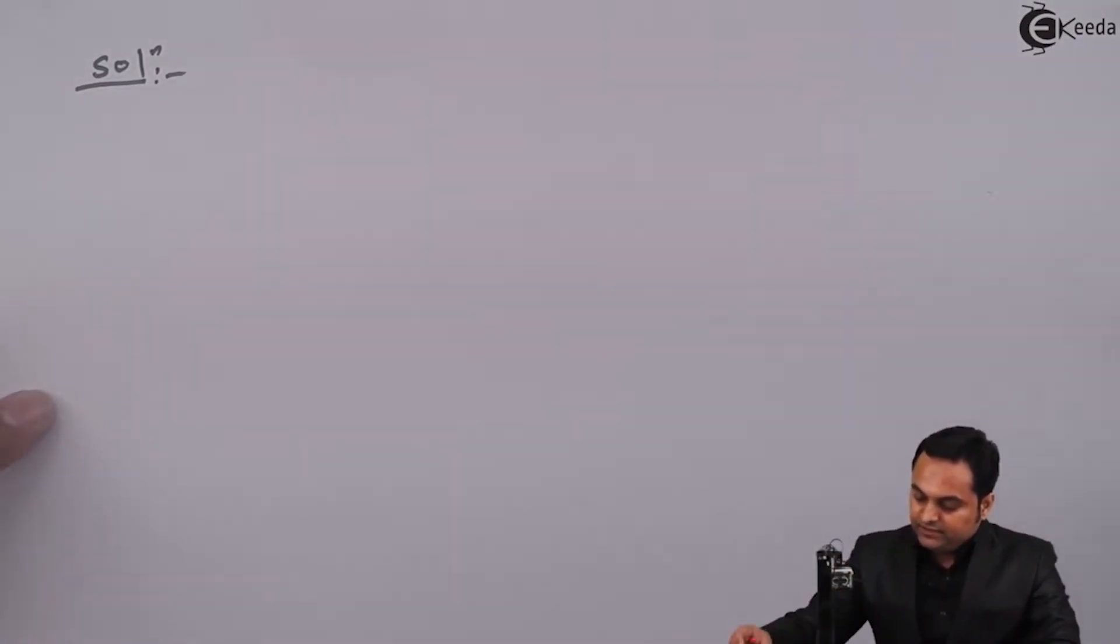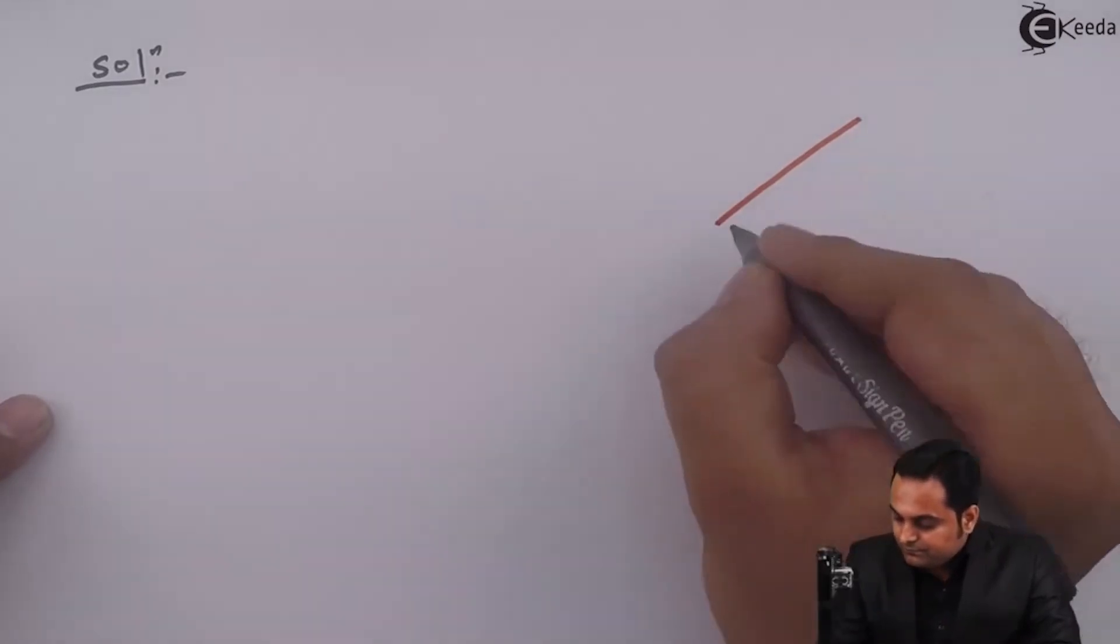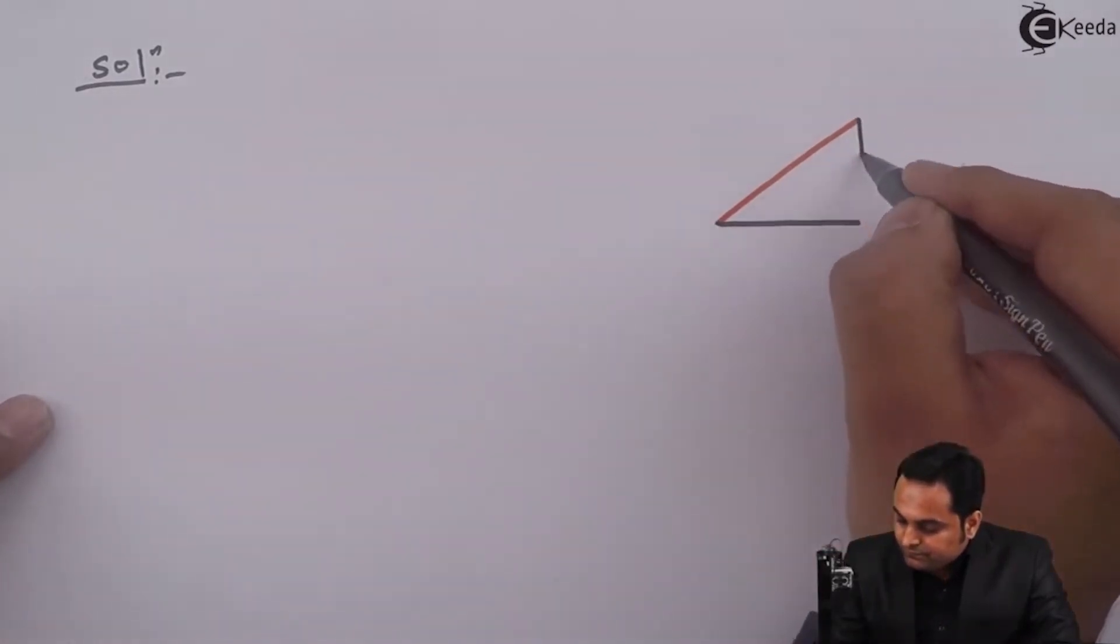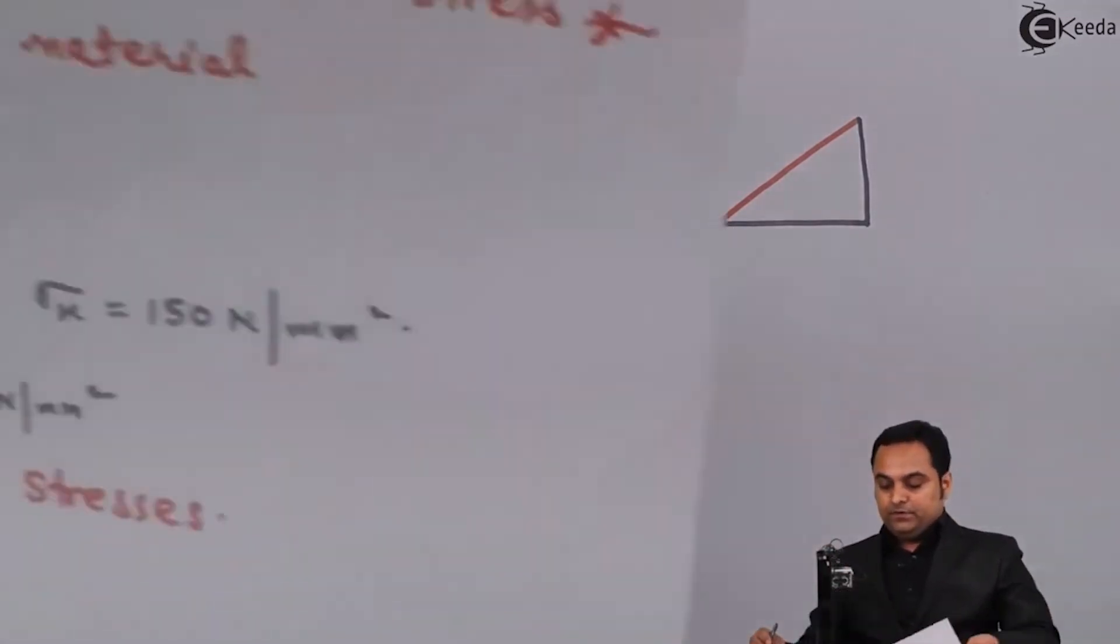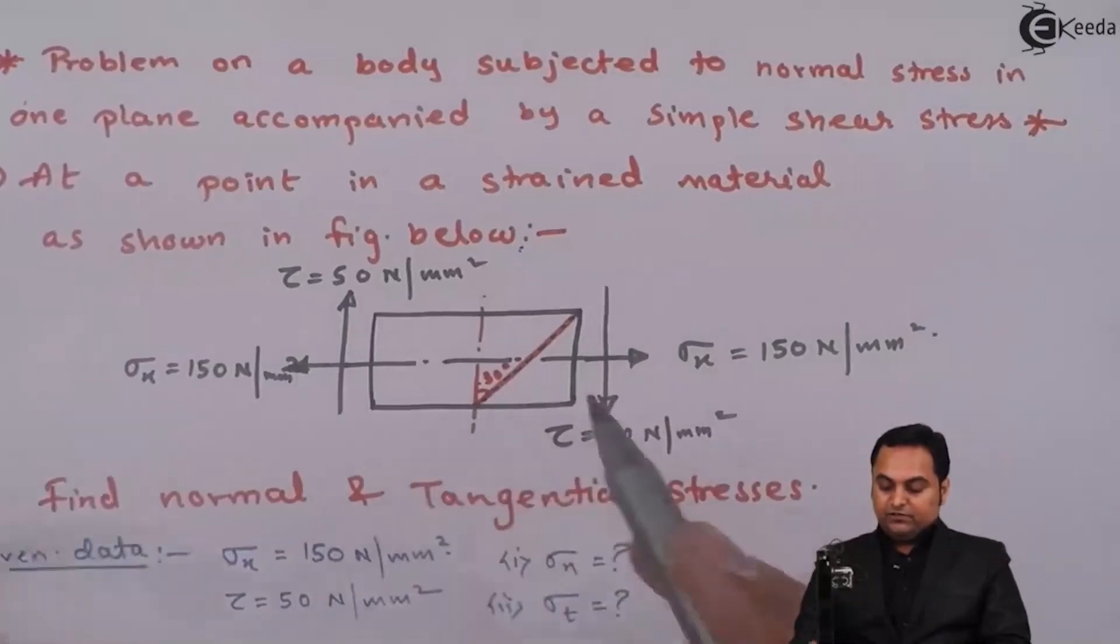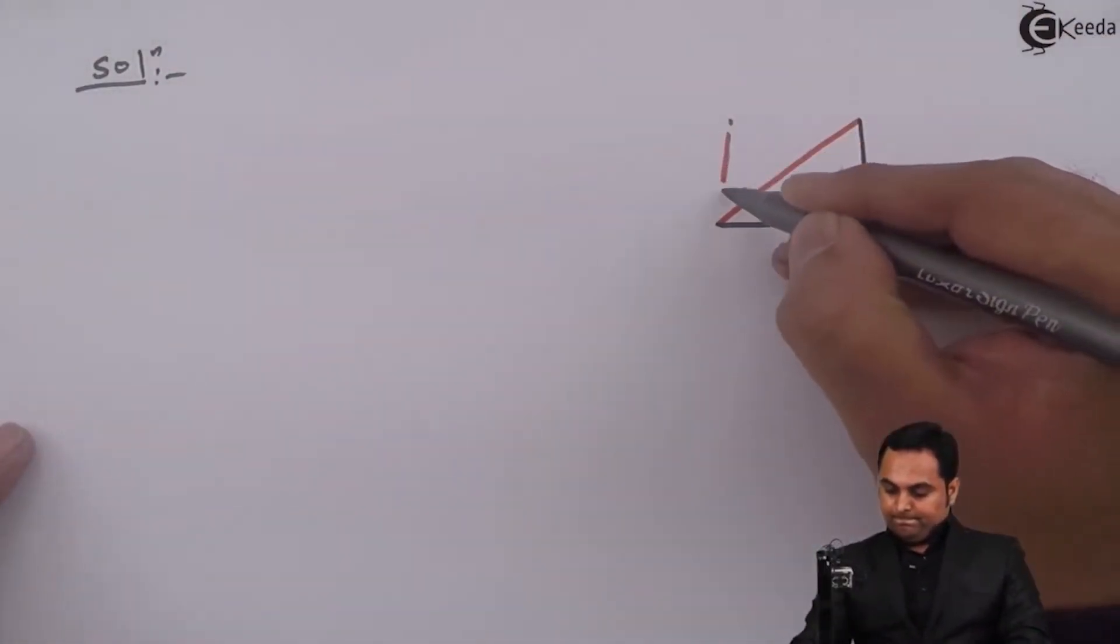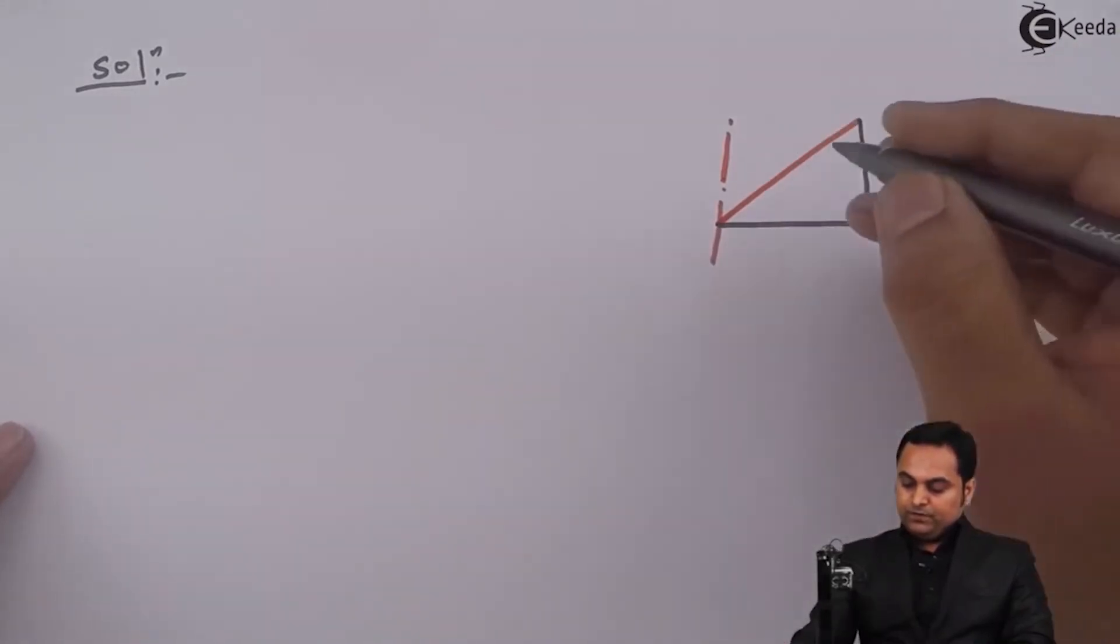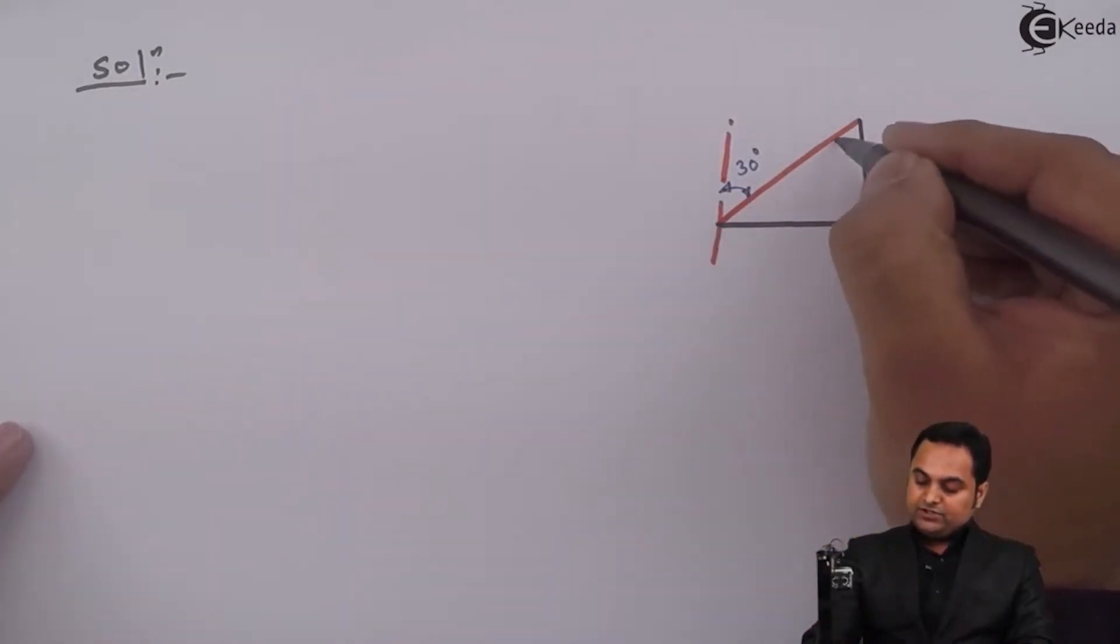Since the inclined plane is given, now I am taking just a part of this diagram. The inclination of the plane is given with respect to the vertical here, which is 30 degrees. So this inclination is given as 30 degrees.